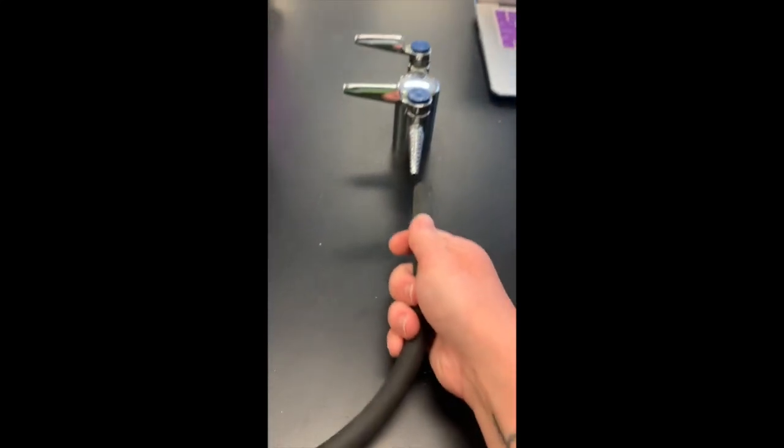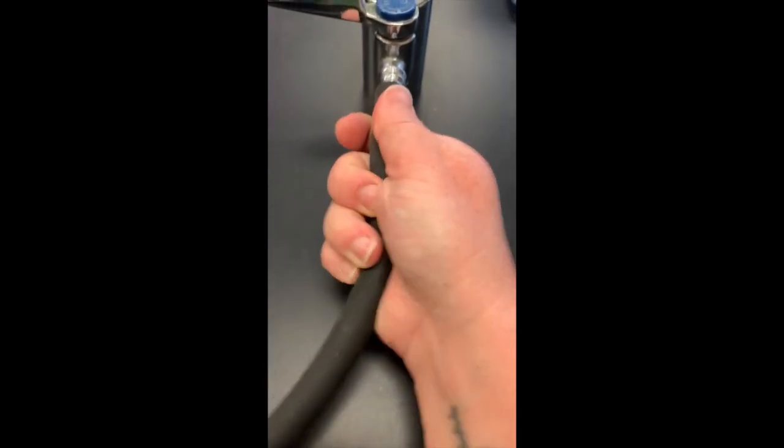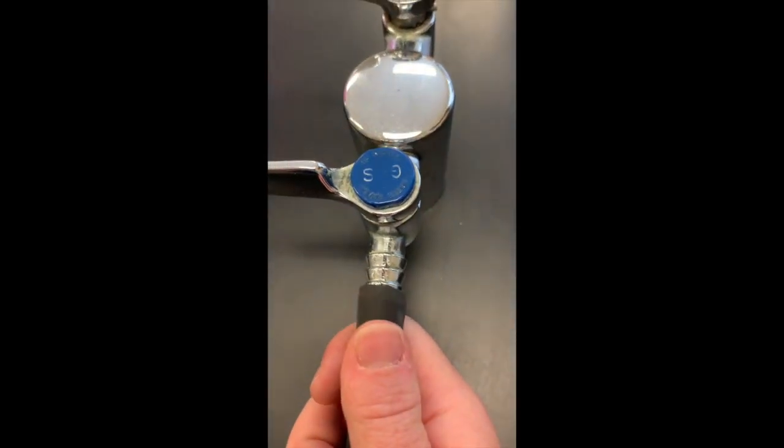First, take the open end of the rubber tubing and push it onto the gas nozzle. You can tell it's gas because it says it. Push it up to about the third notch.